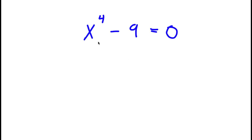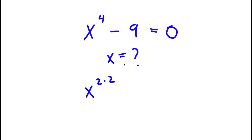In this problem, I have x to the power of 4 minus 9 is equal to 0. I want to find the value of x. I'm going to first rewrite x to the power of 4 as x to the power of 2 times 2, and rewrite the 9 as 3 to the power of 2, so this equals 0.